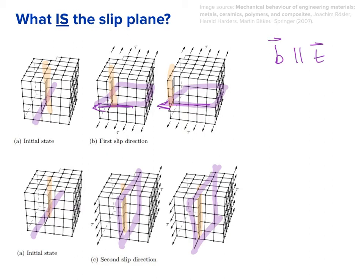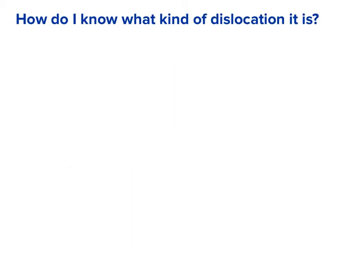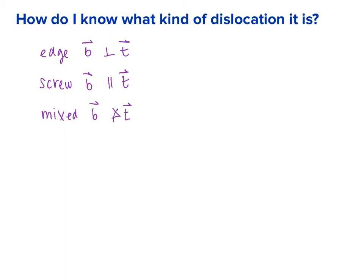How do we know what kind of dislocation it is if we're just given B and T? For an edge dislocation, the Burgers vector is perpendicular to the dislocation line. For a screw dislocation, the Burgers vector is parallel to the dislocation line. You can also have a mixed dislocation, in which case the Burgers vector makes some intermediate angle with the dislocation line.